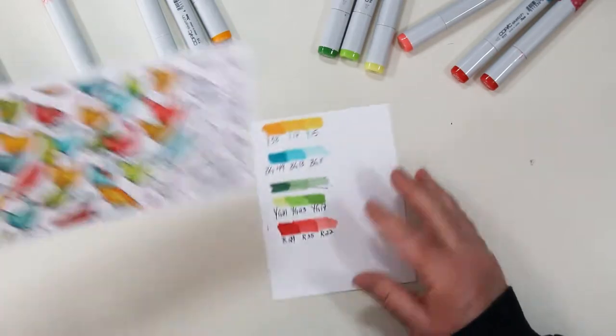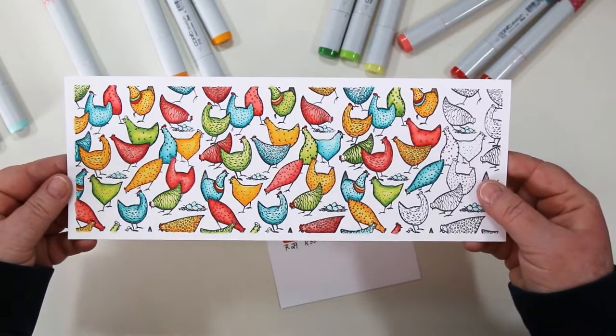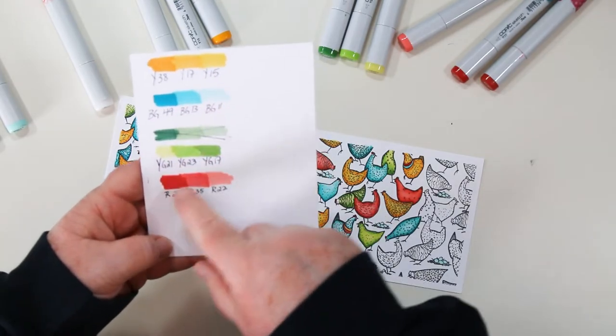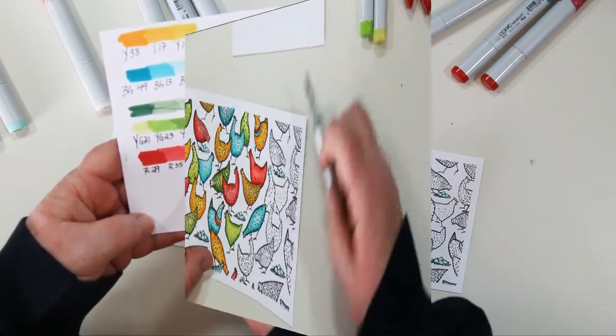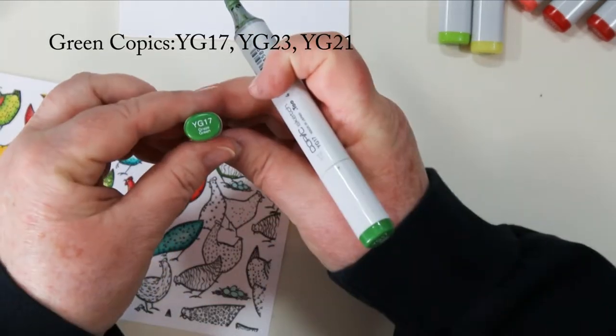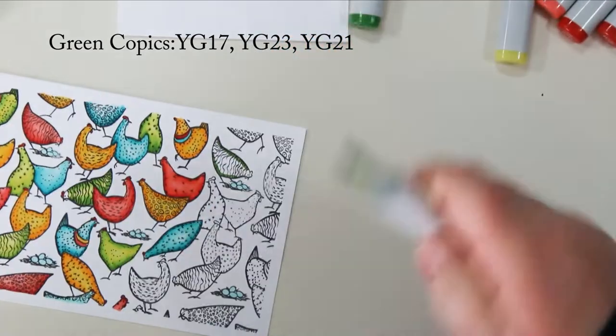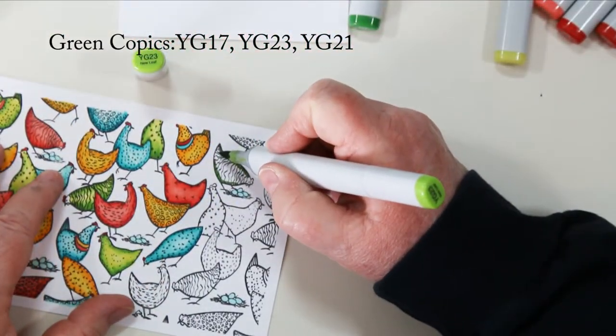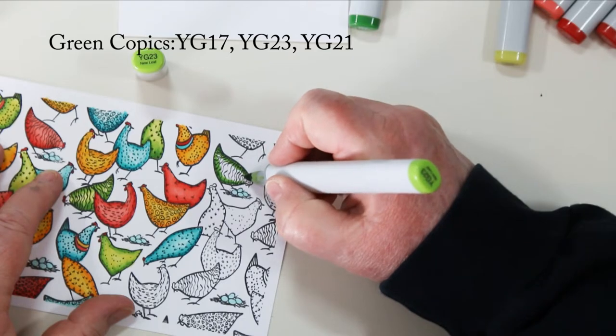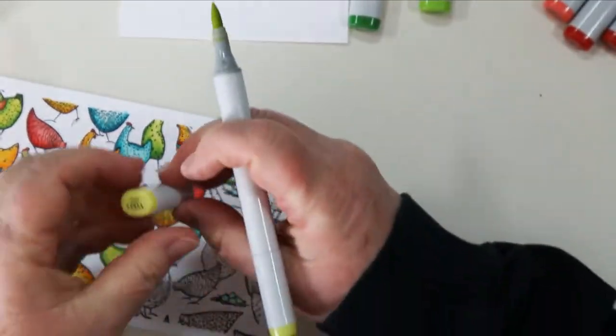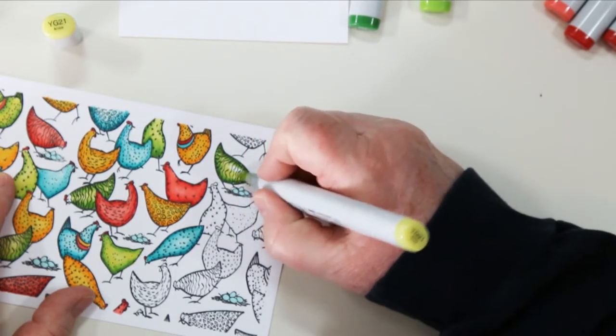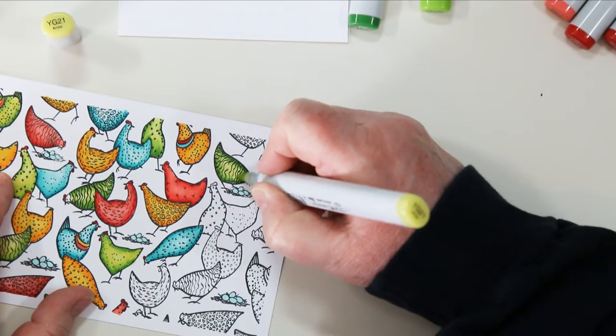Next I use my Copics for some quick coloring and I'm just going to give you a demonstration. I've recorded all the numbers. If you can't see them here I will list them in my blog post and the downloadable PDF file. So I'll give you a demonstration with this little green chicken. I'm using YG21, YG23, and YG17. I start with the darkest color which is the YG17 and do my outline and sort of where the shadow would be. Then I blend over it with the YG23 and then I flood the entire chicken with the YG21 which is the lightest of the colors here. And scribble from the edge in and that pulls some of the darker ink in with it.